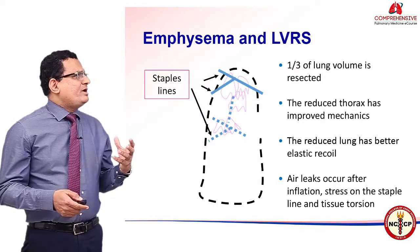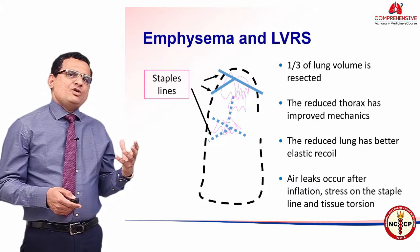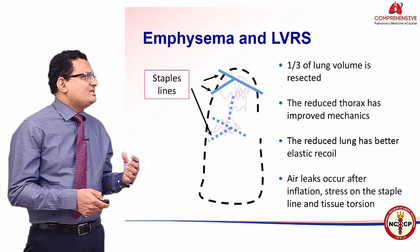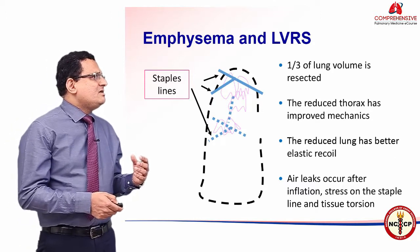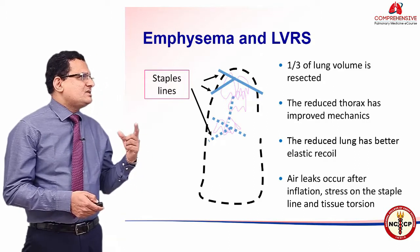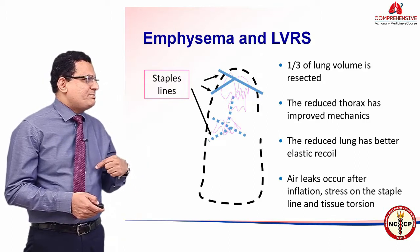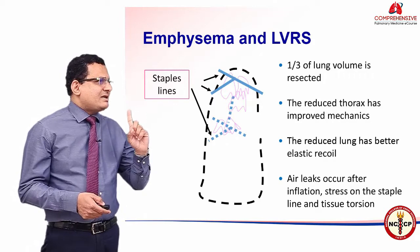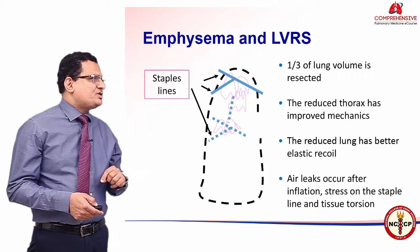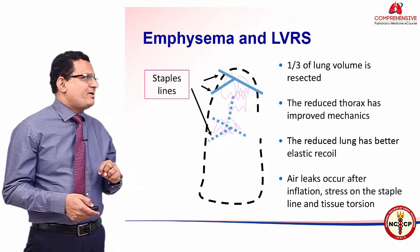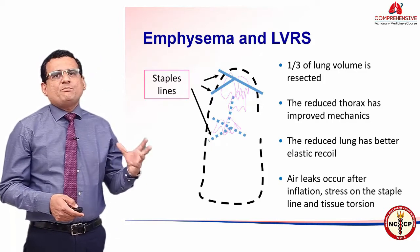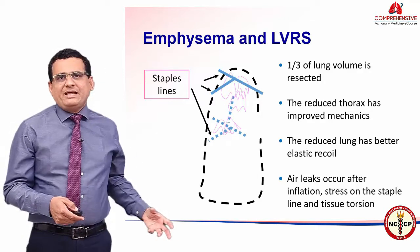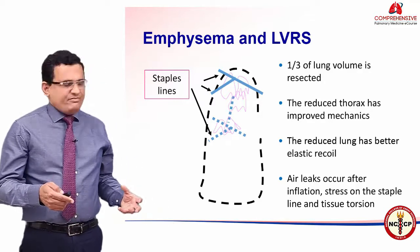When talking about lung volume reduction for emphysema, one third of the lung is resected. The reduced thorax has improved mechanics and the reduced lung has better elastic recoil. However, air leaks can occur after inflation stress on the staple line and tissue torsion, meaning some patients can end up with prolonged air leaks when LVRS is performed.